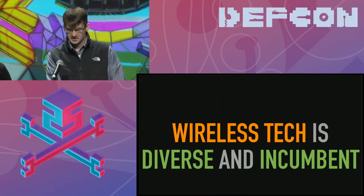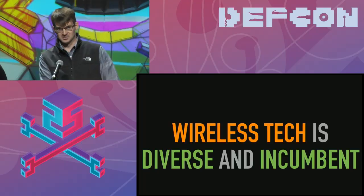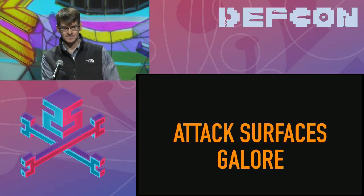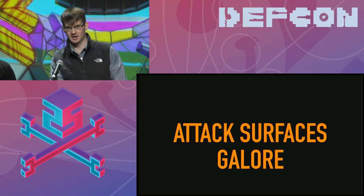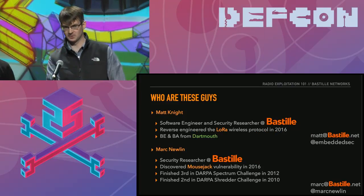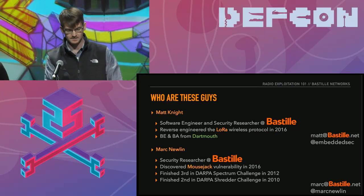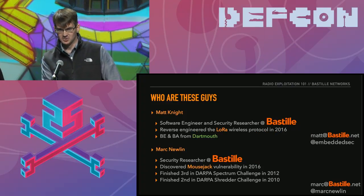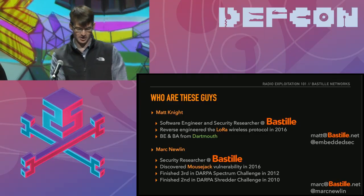Fast forward to 1998 and Ethereal comes out — it's since rebranded and we know it as Wireshark. What this did was massively commoditize it: it took the proprietary solution and made it a commodity. Very cheap, very easy to use, and people were able to hack on it and extend it.